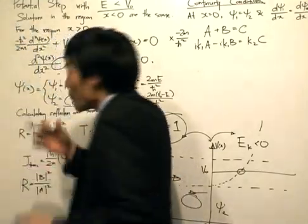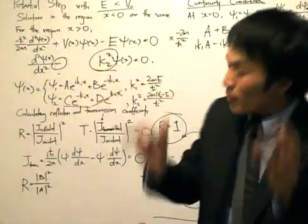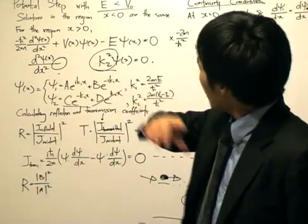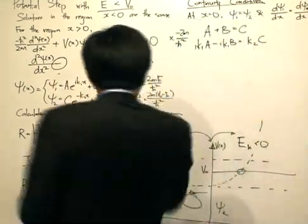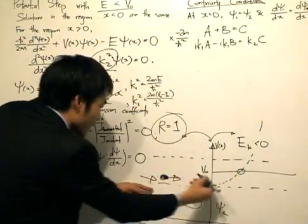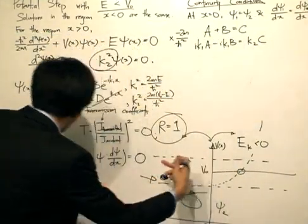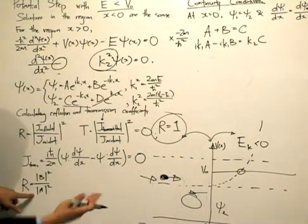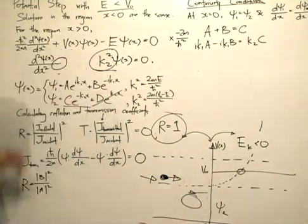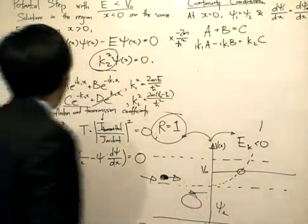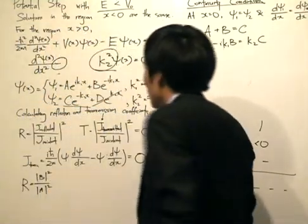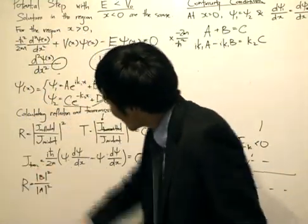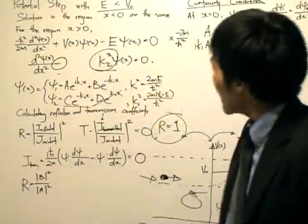We borrow the result from the previous problem: r equals the intensity of the wave traveling in the reflected direction divided by the intensity of the wave traveling in the incident direction — otherwise known as the magnitude of b squared divided by the magnitude of a squared. So how do we get b and a?